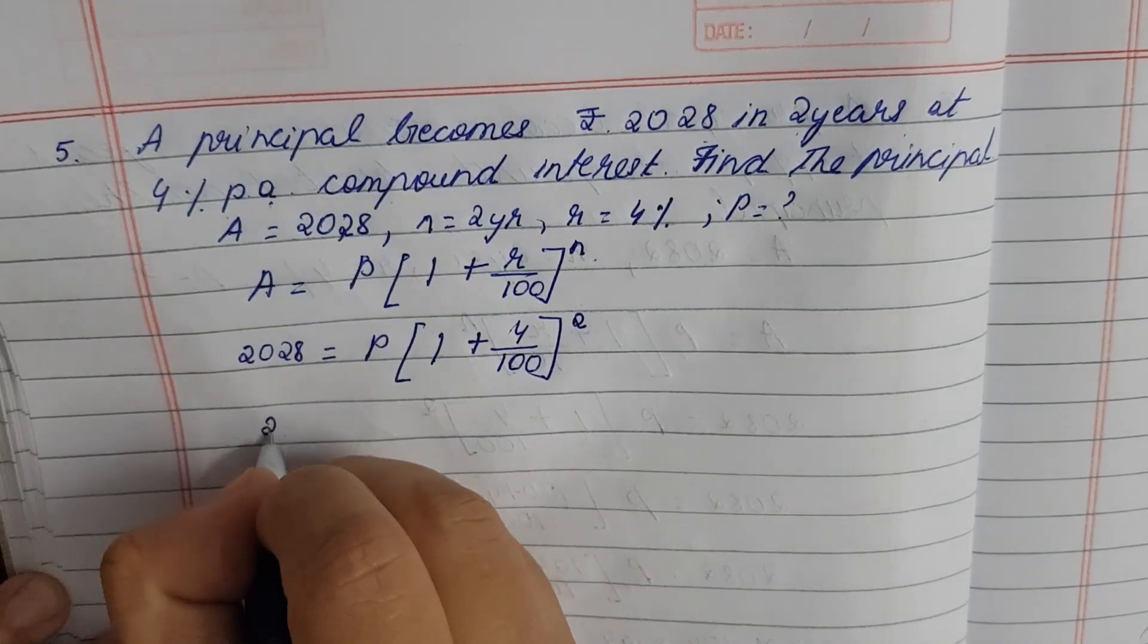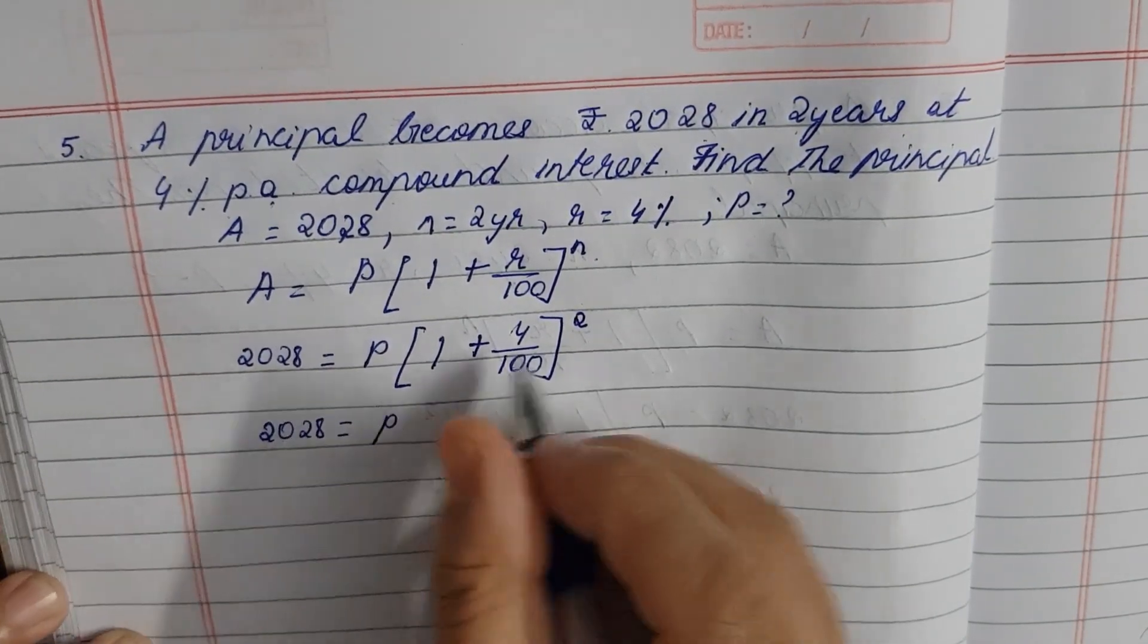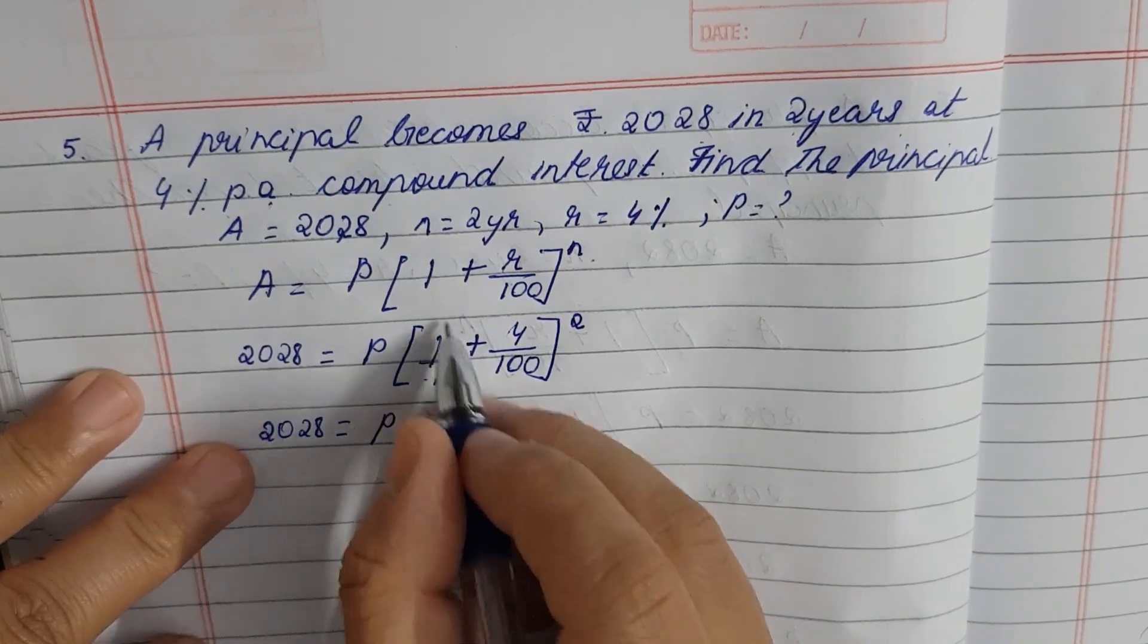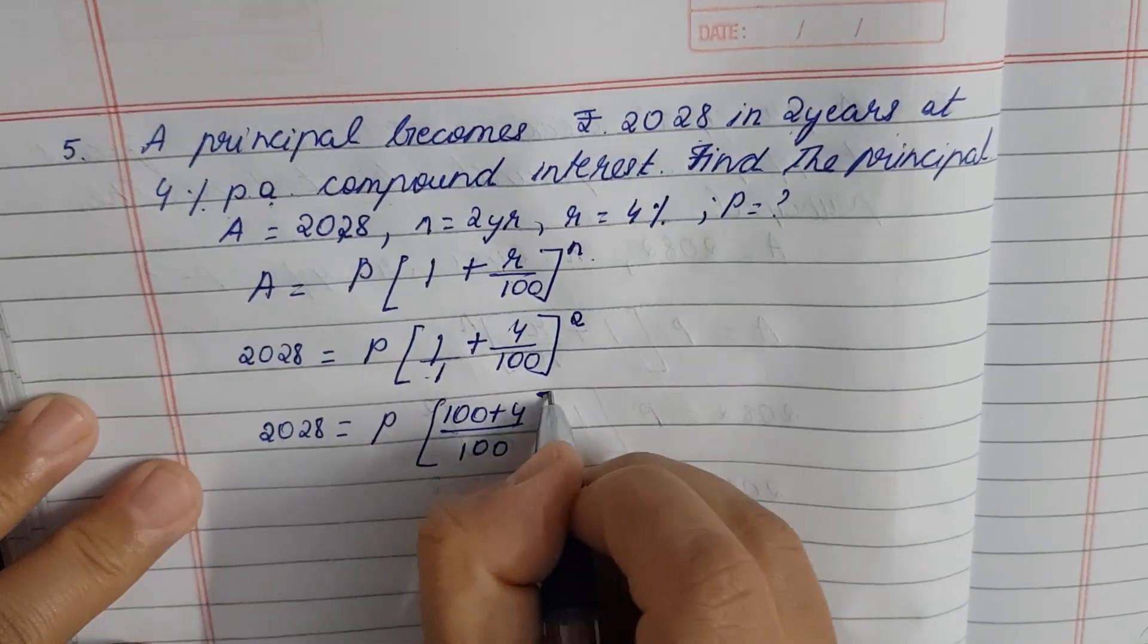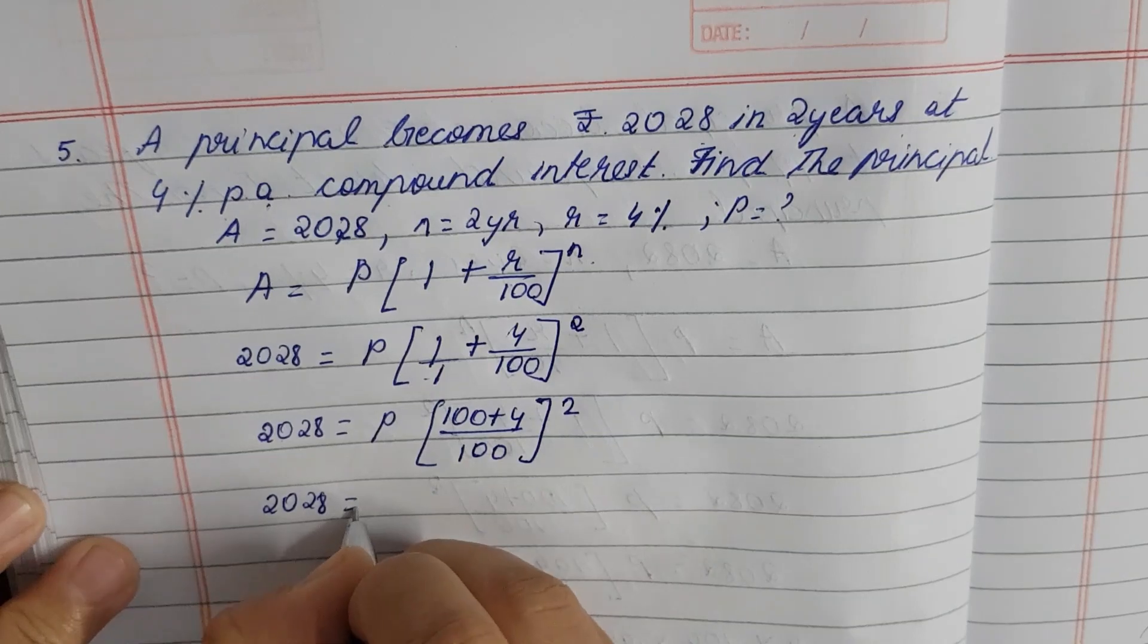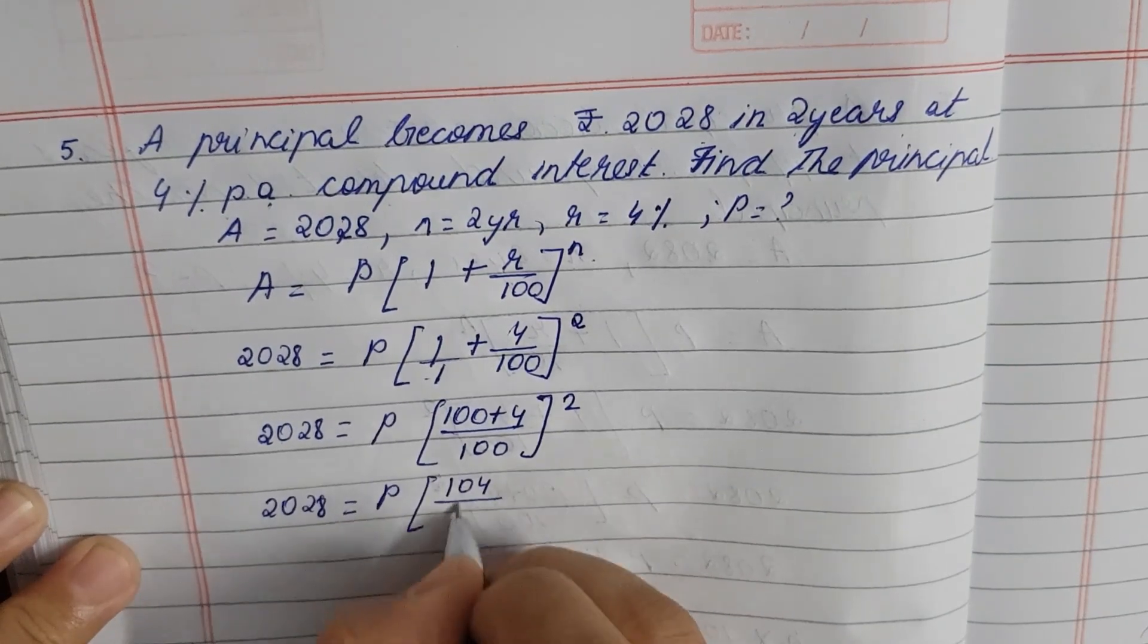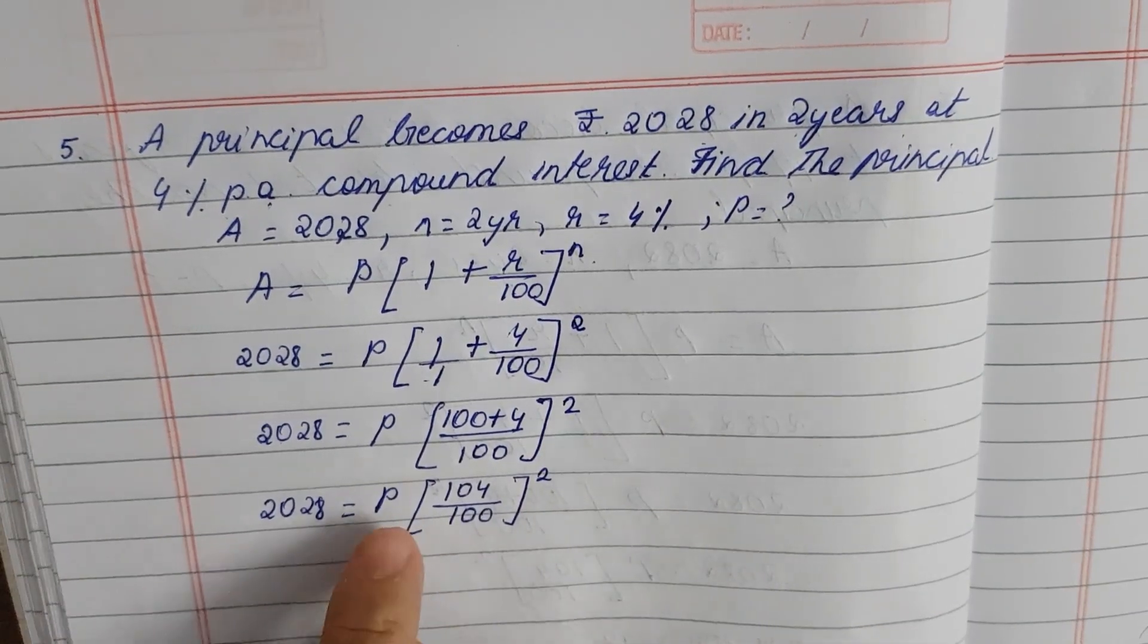So further on 2028 is equal to principle. So denominator is 100. If we equate it equal to 100, so here 100 multiply, so 100 plus 4 to the whole power 2. So 2028 is equal to principle, 100 plus 4 is 104. So 104 divided by 100 to the whole power 2.